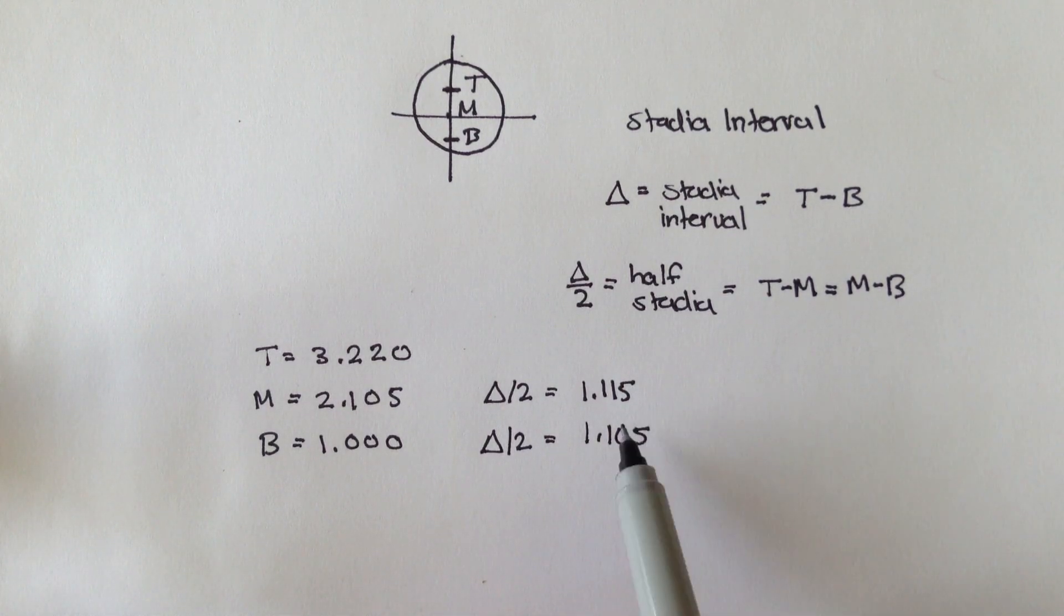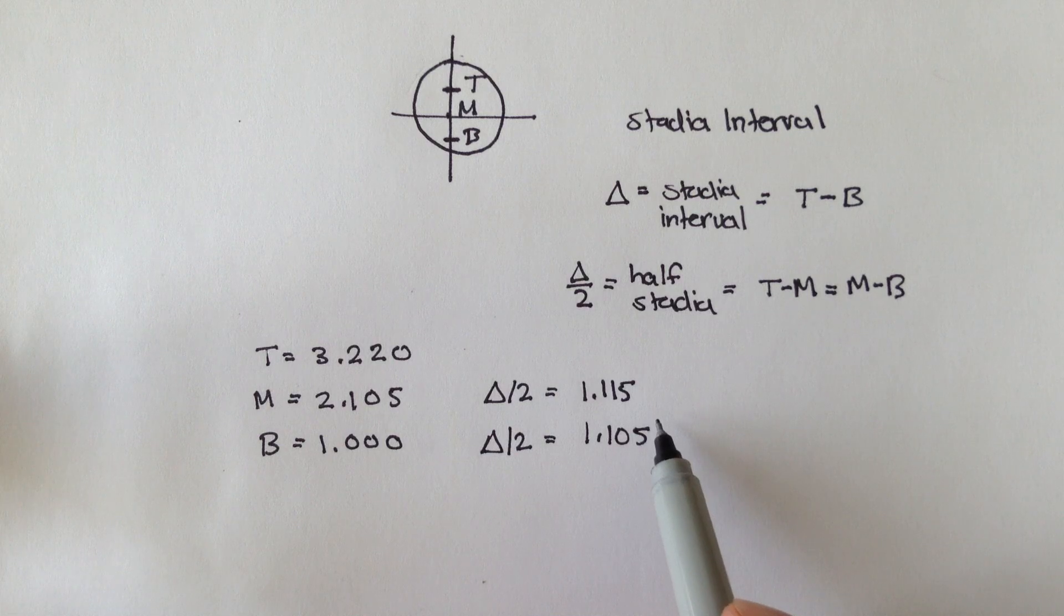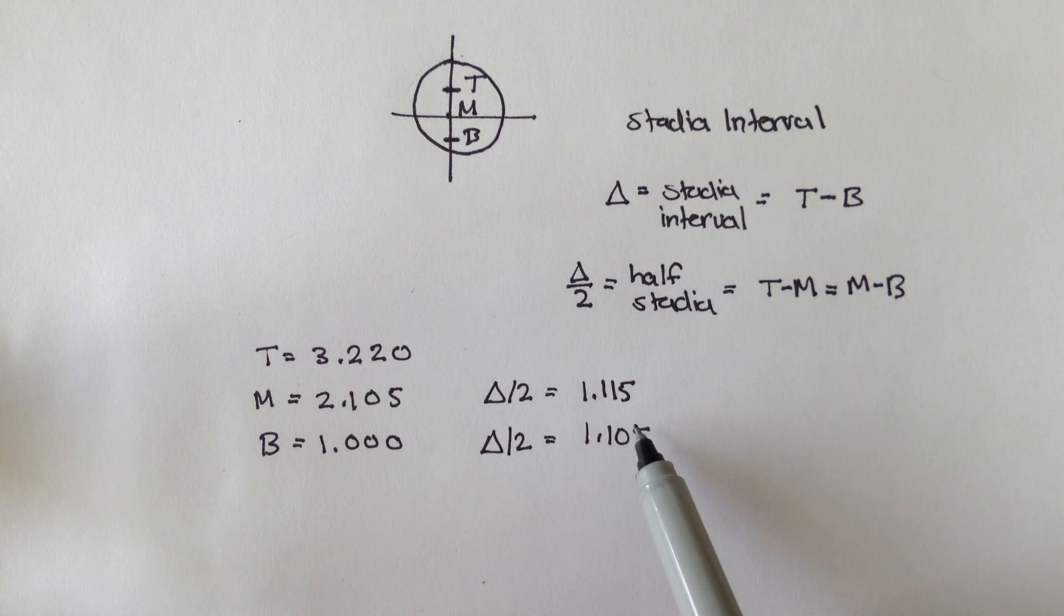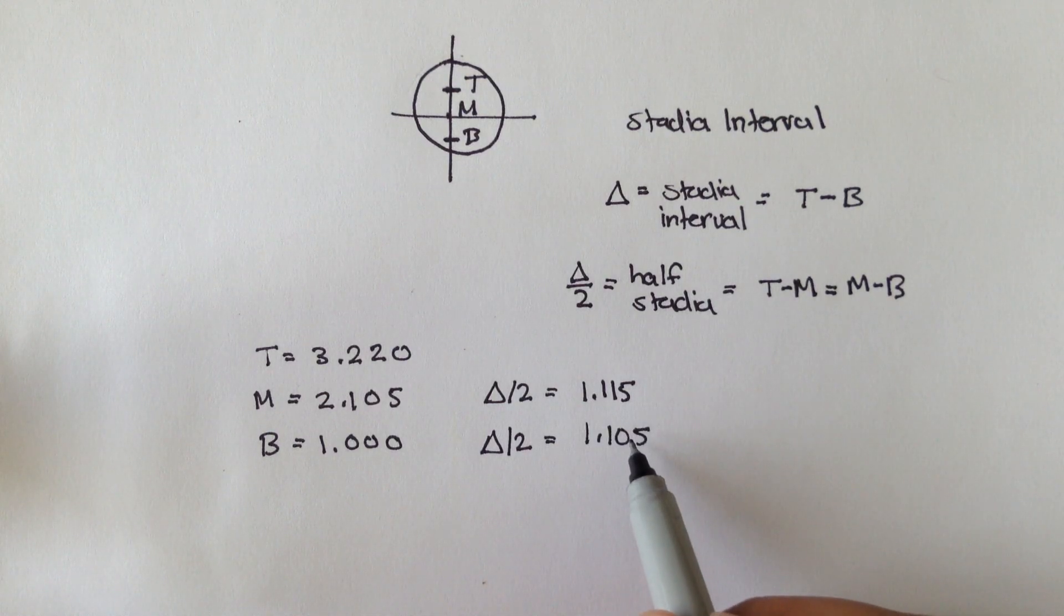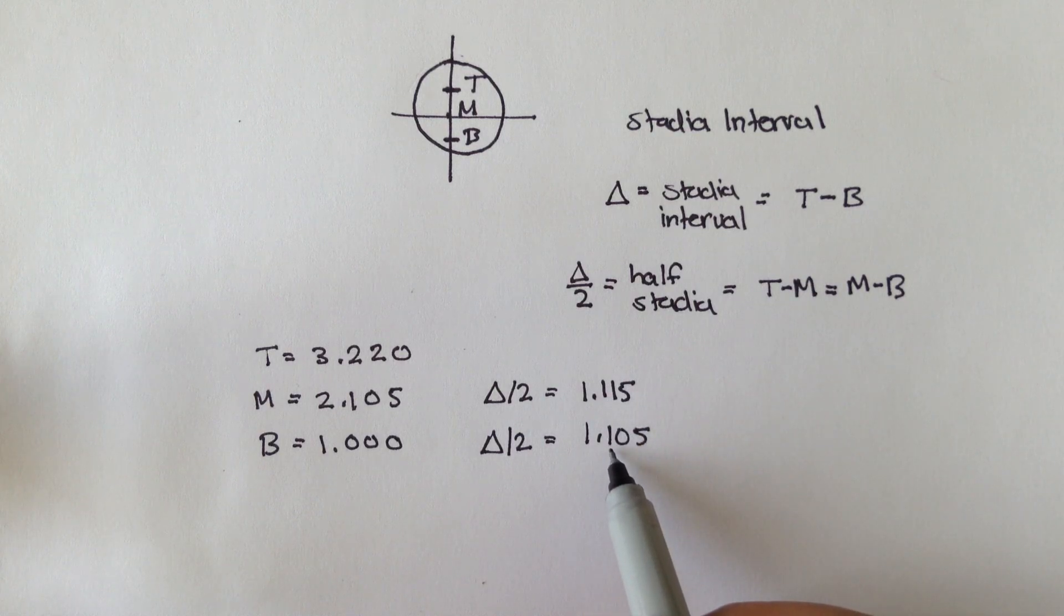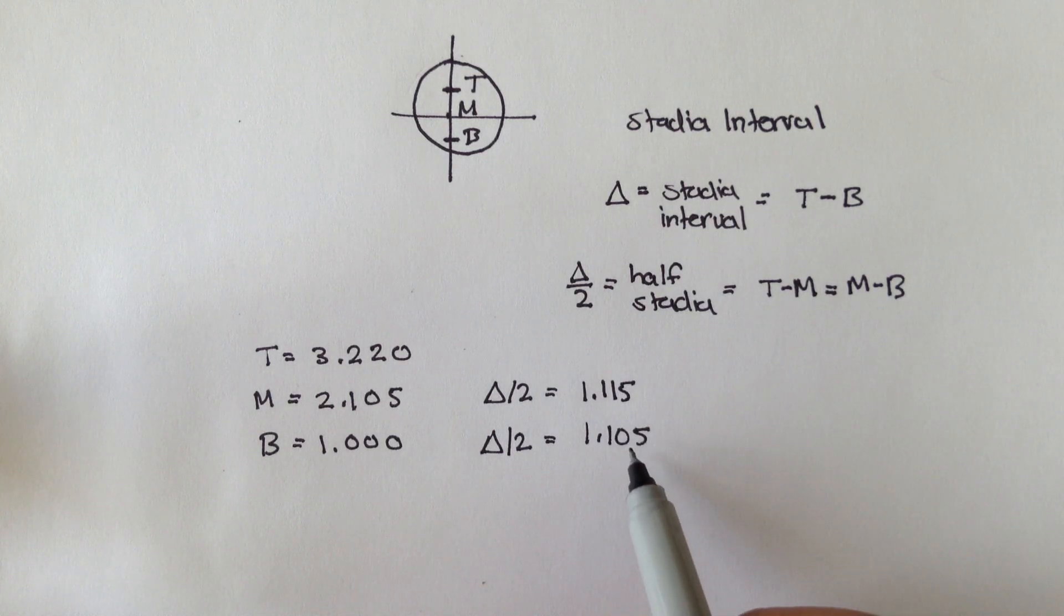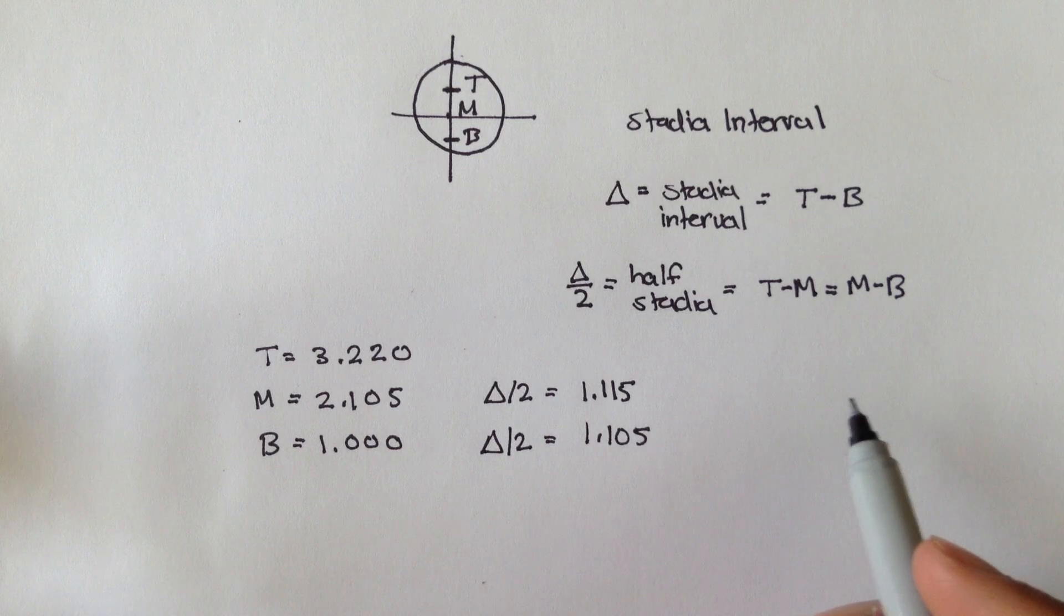Now, these two distances, or these two measurements, are not, they don't check. And by not checking, I mean they're too roughly far apart. They're actually off by a lot. They're only good up to the first decimal place. The second decimal place, there's a difference. And that's not good.